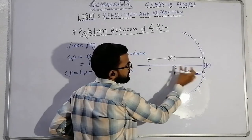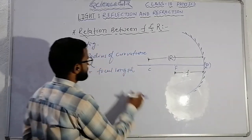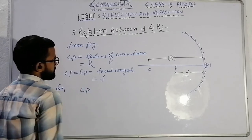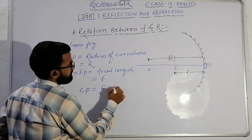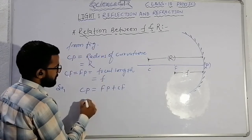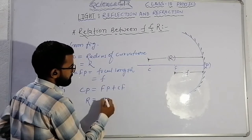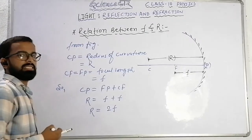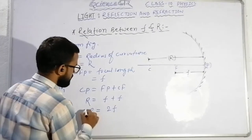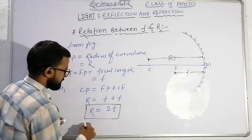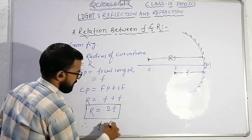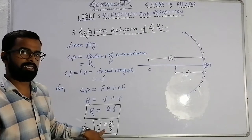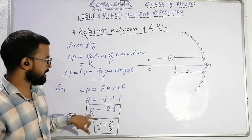Since F is the middle point of CP, FP is equal to CF. So CP is equal to FP plus CF, which gives us CP equals R and FP plus CF equals f plus f. Therefore, R is equal to 2f. This is the relation between radius of curvature and focal length. We can also write f is equal to R divided by 2.